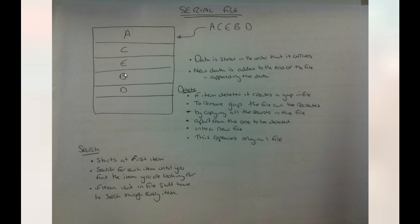If the item isn't in the file — say we were looking for Q — we couldn't just stop at the first record. We need to search through every single item or record to find if it's there, and if it isn't there, we'd find out at the end of the file. This means for a search that finds nothing, it takes a long time and more processing power, because we have to go through every single record.